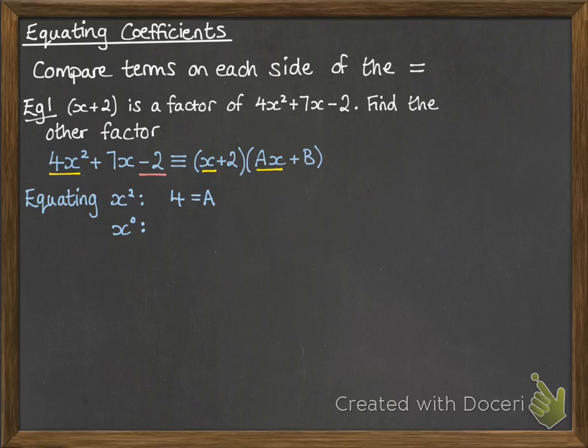So on the left, we have minus 2. To make a constant, multiplying out that bracket on the right would be 2b. So we get minus 2 must be equal to 2b, so b is equal to minus 1. So the other factor is 4x minus 1, just simply placing it into that second bracket for a and b.